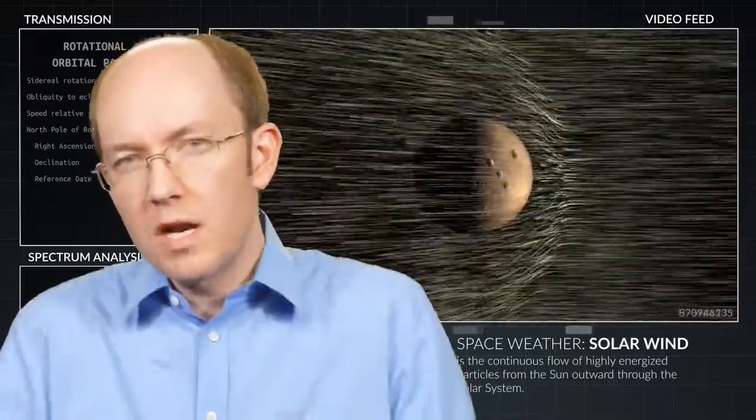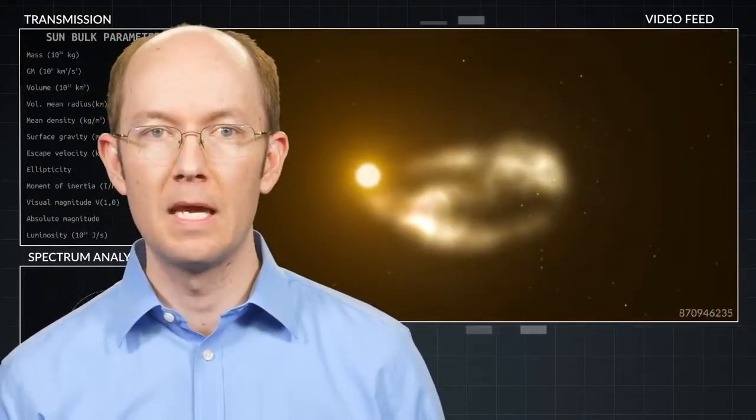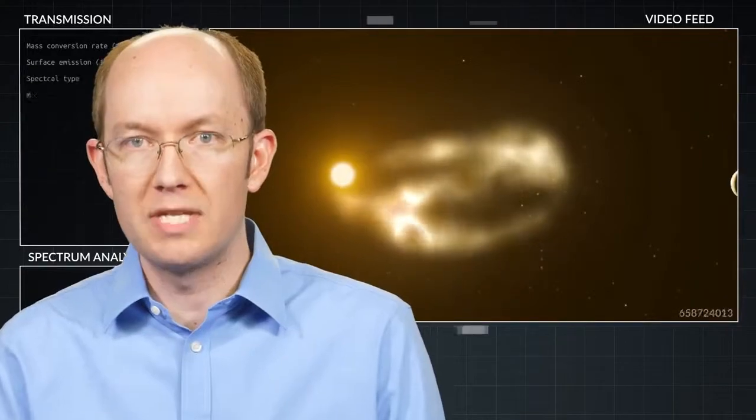While space within our solar system is nearly a vacuum, there is a continuous flow of particles streaming outward from the Sun, and this forms what we call the solar wind. A continuous wind of particles that travels at incredible speeds, 1 to 2 million miles per hour.